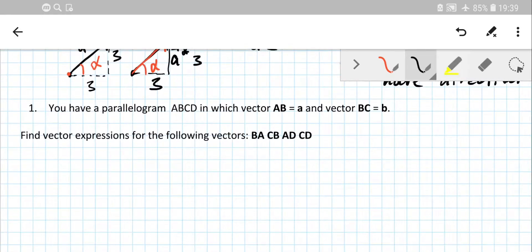So let's move next. We have a little problem here. You have parallelogram ABCD in which vector AB and vector BC are given as two letters A and B. So let's set up the parallelogram.